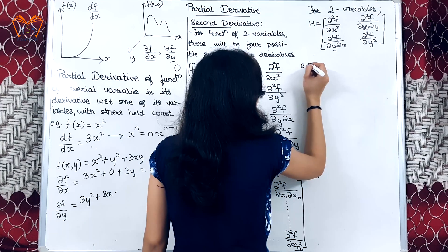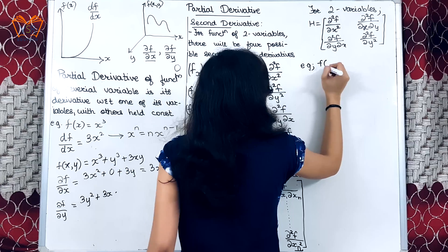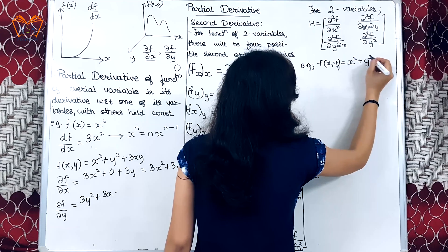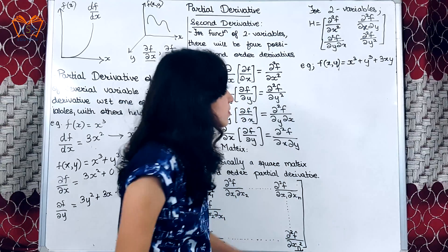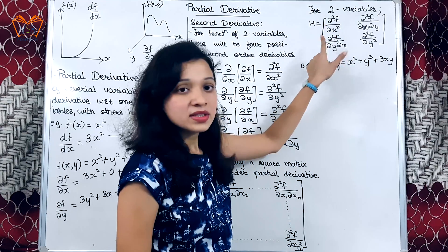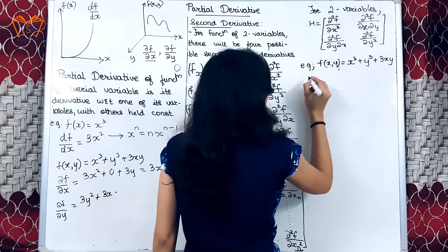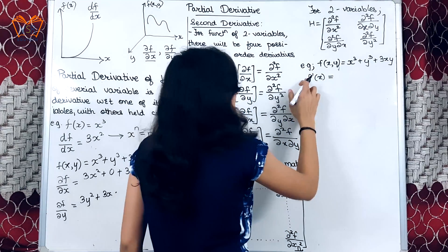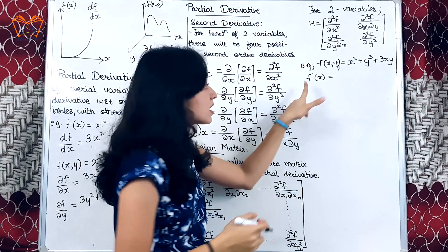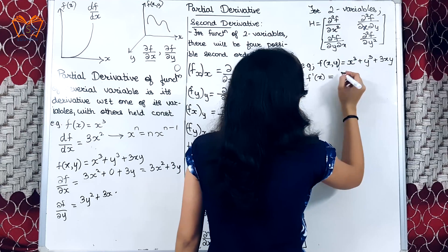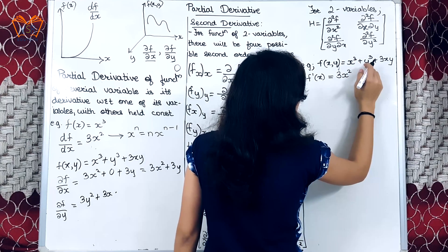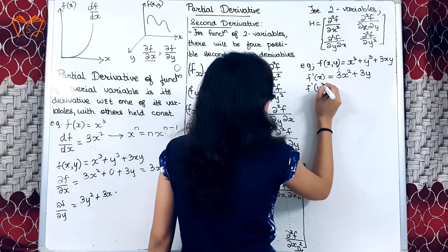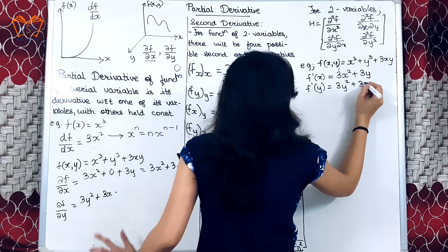Let us now consider one example. We will consider the same function: f(x, y) = x³ + y³ + 3xy. For the Hessian matrix there are four combinations for two variables. First we find the single partial derivative with respect to x, denoted ∂f/∂x or f'ₓ. The result is 3x² + 3y. Similarly, f'ᵧ will be 3y² + 3x, as we had seen previously.